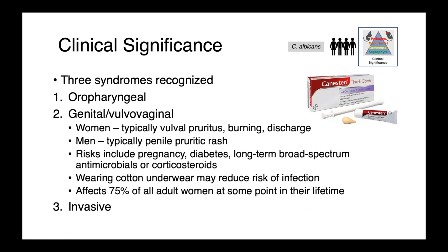We can also see genital or vulvovaginal candidiasis — a very common infection affecting approximately 75% of adult women at some point in their lifetime. In women, we typically see vulvopruritis, burning, and potentially discharge. Genital infections in men manifest as a pruritic penile rash. Risk factors include pregnancy, diabetes, and long-term broad-spectrum antimicrobials or corticosteroids — therapies that cause perturbations to the normal microbial communities of the genital tract or suppress the immune system. Interestingly, wearing cotton underwear has been shown to reduce the risk of infection.